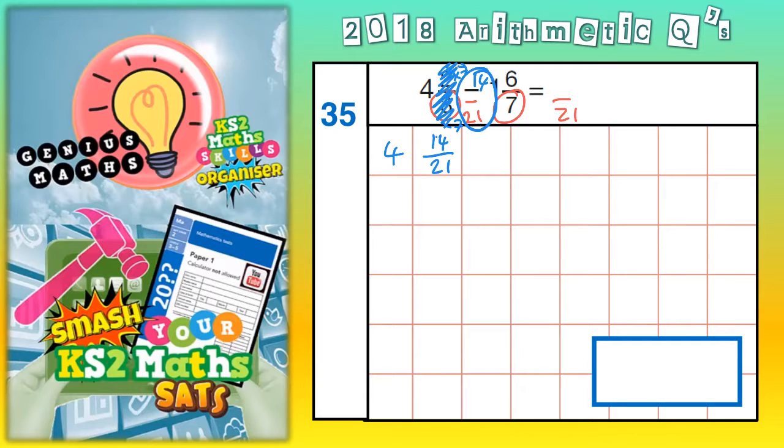With the 6 7ths, to get from 7 to 21, that's times 3. So you need to times 6 by 3 as well. So 6 times 3, that's 18 21ths. So we've got 4 and 14 21ths take away 1 and 18 21ths.